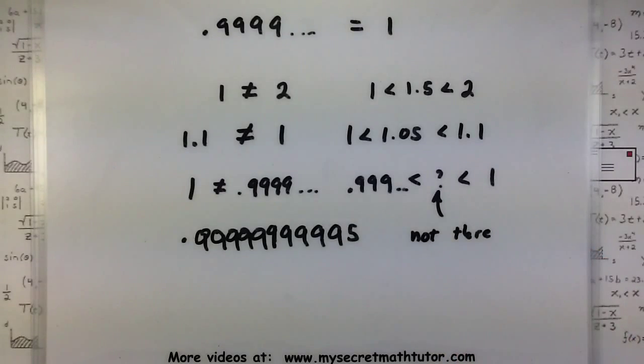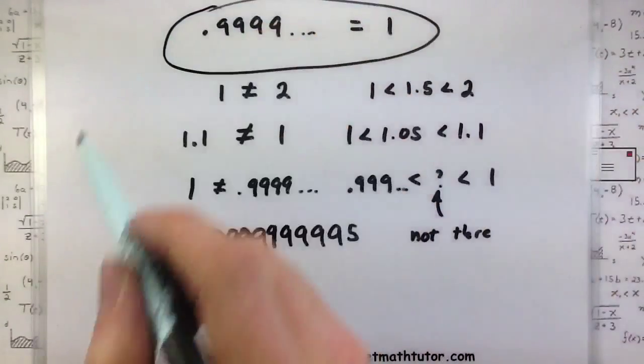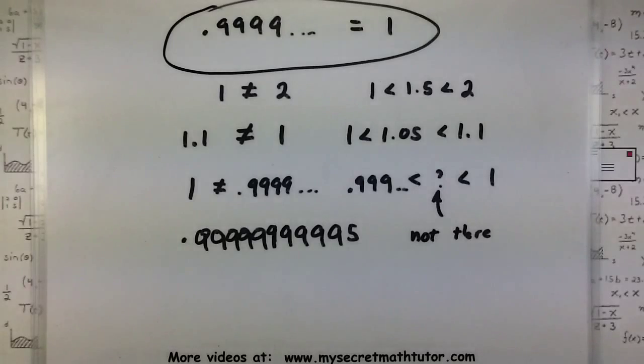Well, since there's no space between the numbers, they must be the same number. Therefore, 0.999 repeating is actually equal to 1.